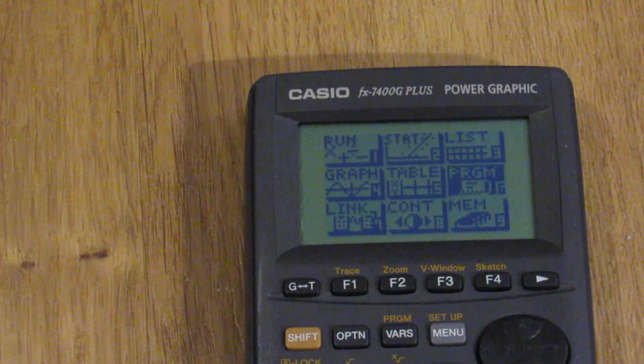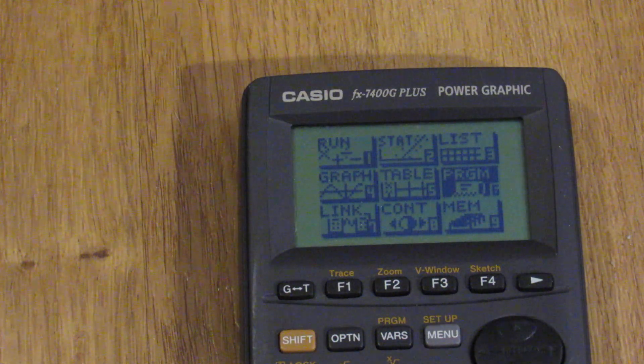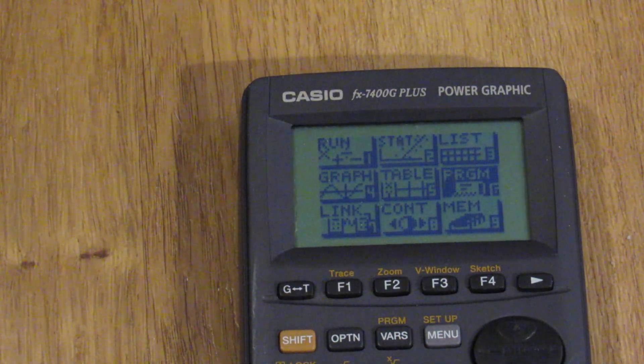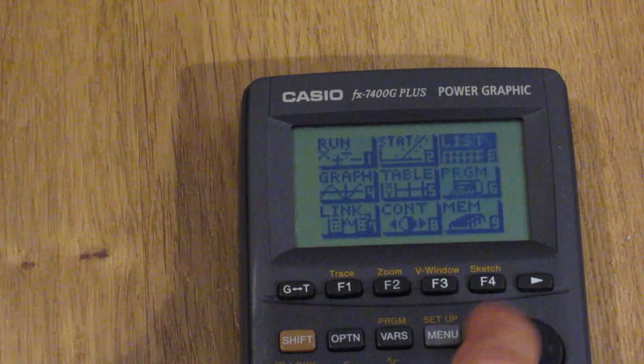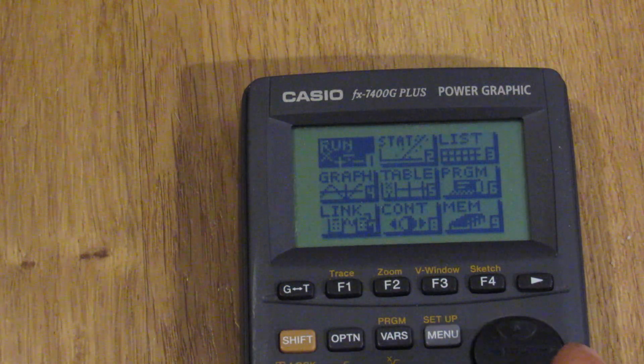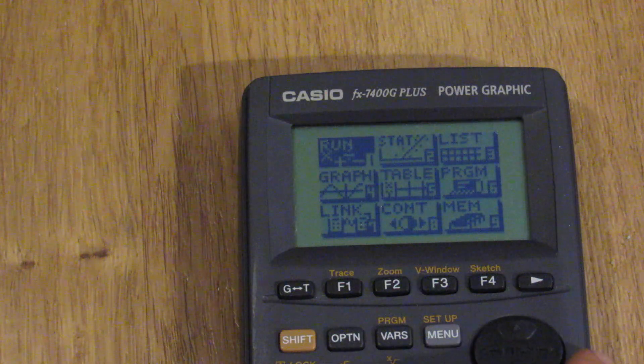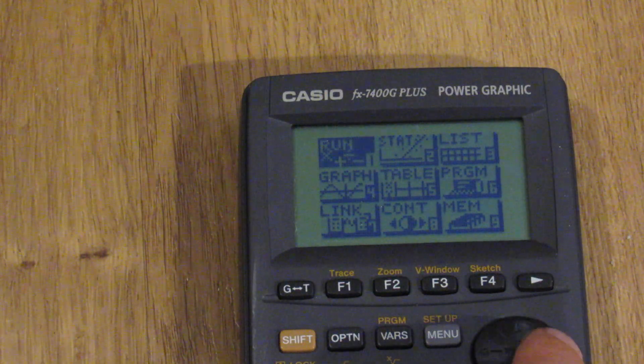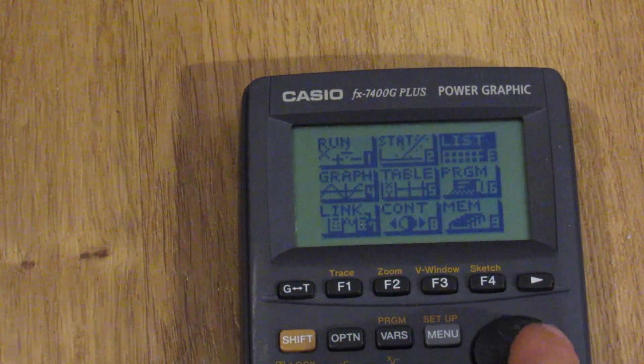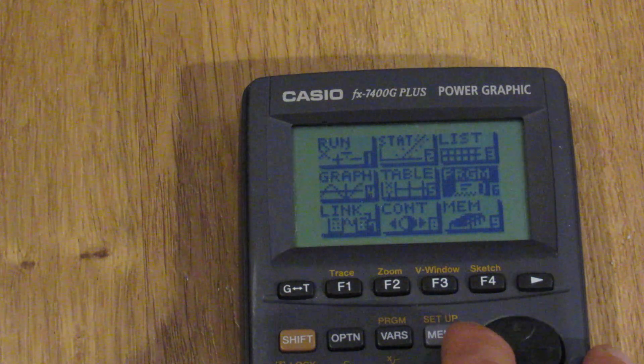You see there's nine different functions. Run for just doing mathematical operations, a statistics function. Let me scroll through these with this d-pad kind of thing. Run, statistics, lists, programs and Casio Basic.